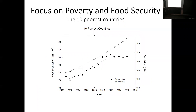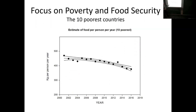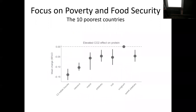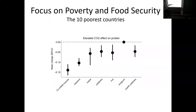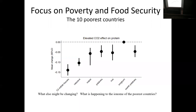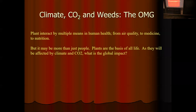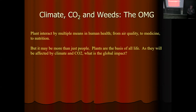What else might be happening in terms of micronutrients and other things? We simply don't know. Plants interact by multiple means in human health — from air quality to medicine to nutrition. I would add that it's about more than just people. Plants are the basis of all life. If you affect how they function, you're going to affect all of biology in ways that we don't necessarily understand. All human biomass is about 0.06 gigatons of carbon, all animals about 2 gigatons of carbon, and plants are 450 gigatons of carbon. Or as we like to say in the plant world: plants rule, animals drool.